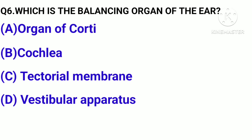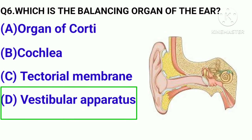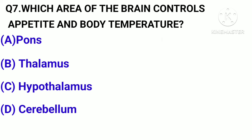Question number 6. Which is the balancing organ of the ear? A, Organ of Corti. B, Cochlea. C, Tectorial membrane. D, Vestibular apparatus. Correct answer: Option D, Vestibular apparatus.